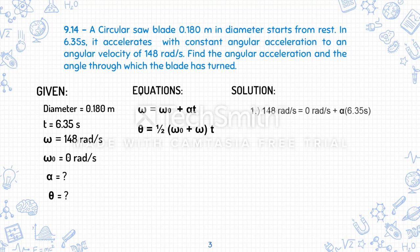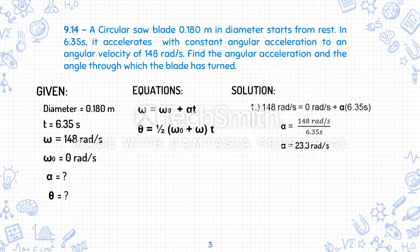For our solution, we substitute our given values. So: 148 rad/s equals 0 rad/s plus angular acceleration times 6.35 s. Deriving from the formula to isolate alpha, we get: 148 rad/s divided by 6.35 s, which gives us an angular acceleration of 23.3 rad/s².